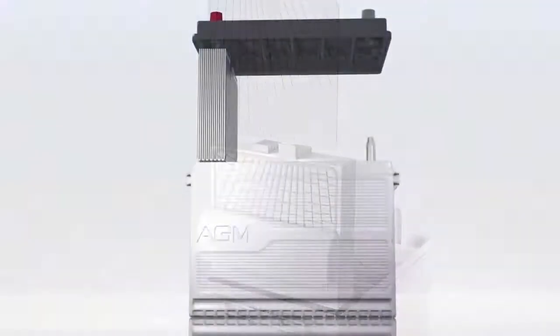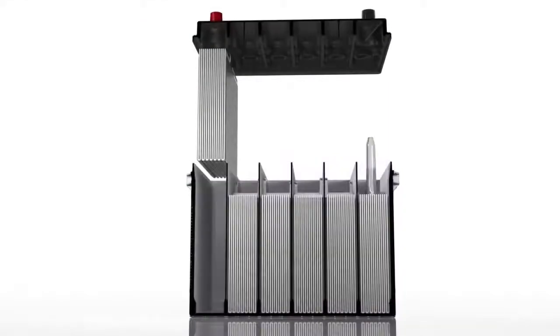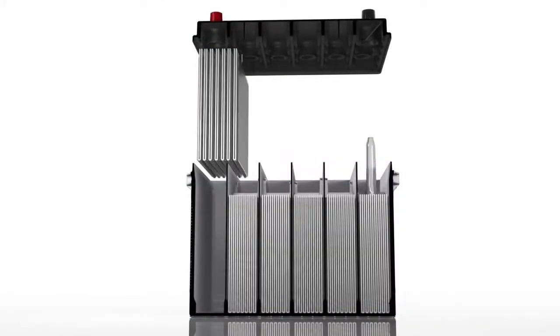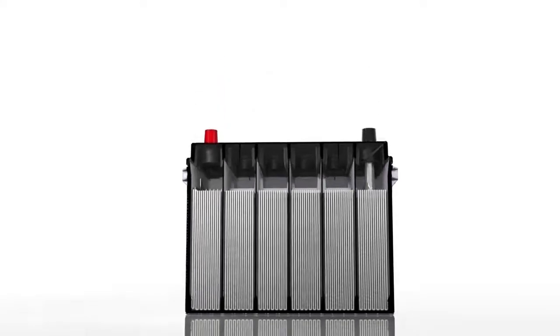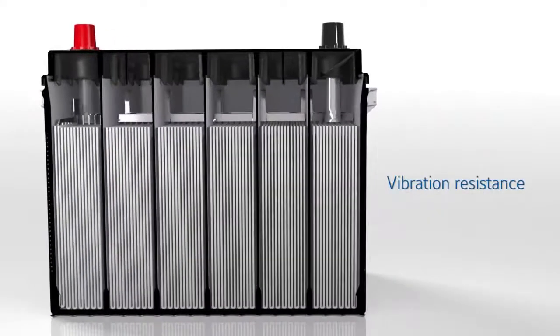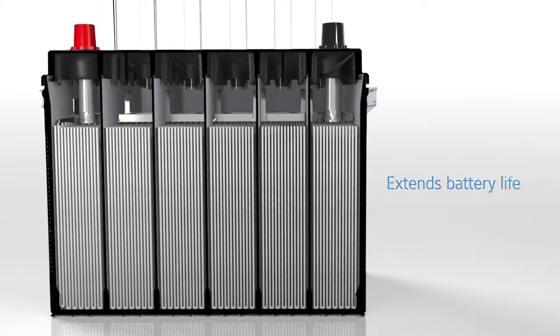Each cell of the battery is made up of positive and negative plates along with the AGM separator. All are tightly compressed to hold the paste on the grids. This improves cycling, vibration resistance, and extends battery life.